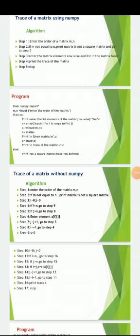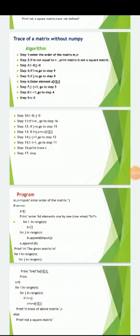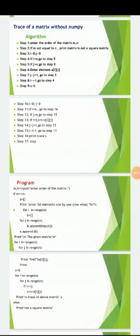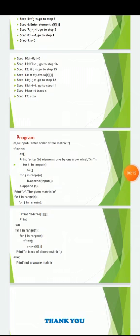For trace of a matrix without NumPy, we need not import NumPy. Step 1: enter the order of the matrix m and n. If m is not equal to n, print 'matrix is not a square matrix.' Step 3: set i to 0 and j to 0. Step 4: if i is greater than n, go to step 9; if j is greater than n, go to step 8. Enter elements a[i][j]. If j+1 tends to j, go to step 5. If i+1 tends to i, go to step 4.